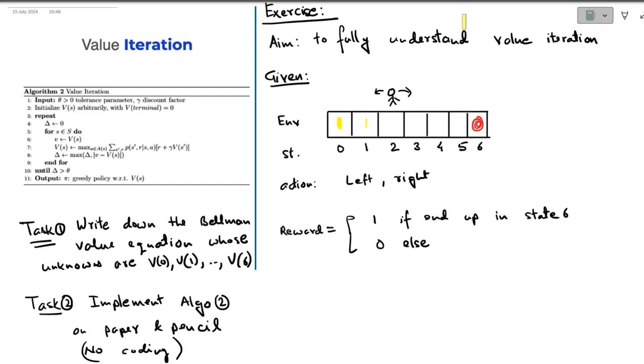If the agent is here, it can go left or right. At any state, agent can go left or right. And if the agent takes the action left, it will move one step left. If the agent takes the action right, it will move one step right for sure. So if you are at 1 and you take the action left, you will come to 0. If you are at 1 and you take the step right, you will come to 2.